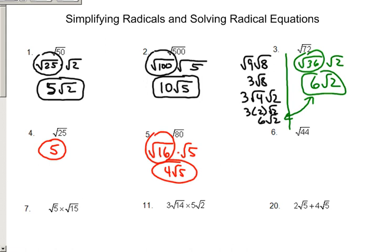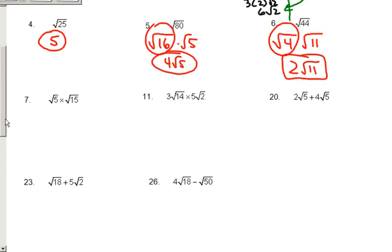Number 6, 44, becomes root 4 times root 11. I can square root 4 to get 2 because root 11 doesn't change. There's your answer. So those are just simple breakdown, one number, not much to it, not complicated.